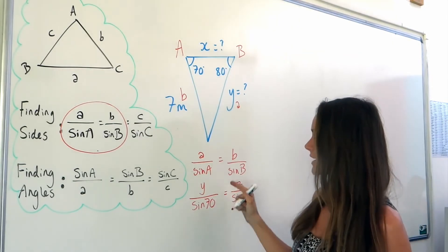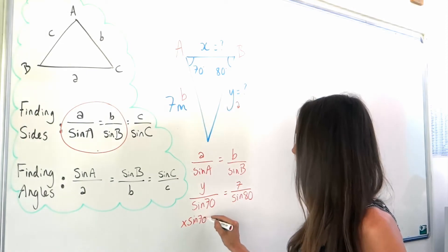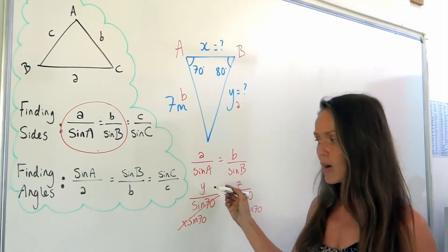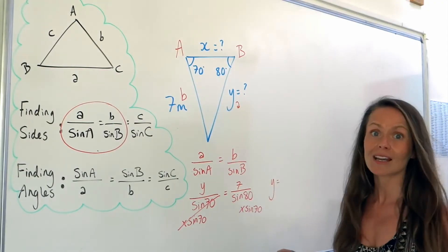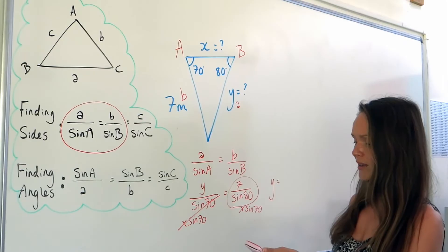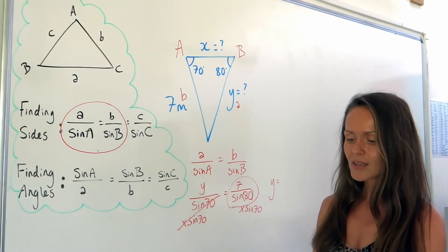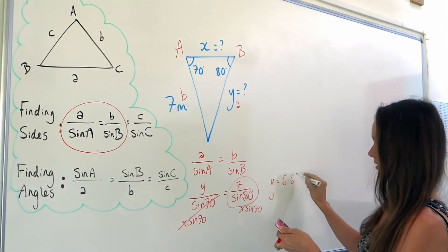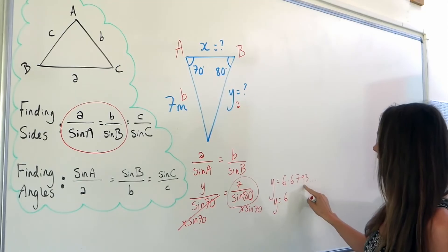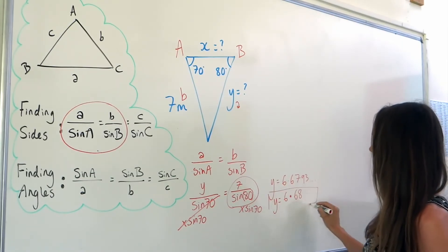Solving the equation: Y is being divided by sine 70, so multiply both sides. On the left-hand side it cancels, leaving one Y. On the right-hand side, put that fraction in the calculator — remember to close brackets after 80 degrees before multiplying by sine 70. That gives 6.793..., and rounded to three significant figures — noting that nine rounds the number up — that's 6.68 metres.